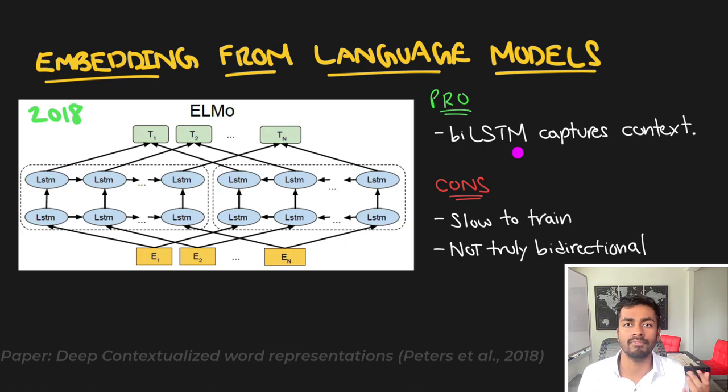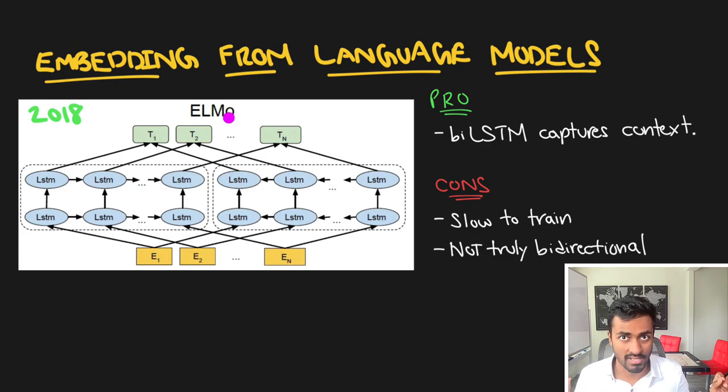But the cons here are the cons that we would typically see in LSTMs. First of all they are very slow to train. They are so slow that they use a truncated version of backpropagation called backpropagation through time to train their networks. And they're also not truly bi-directional. That is that here they learn a forward context and a backward context and then they concatenate them together. But they're not learning both of them at the same time so there might be some contextual information that may be lost.